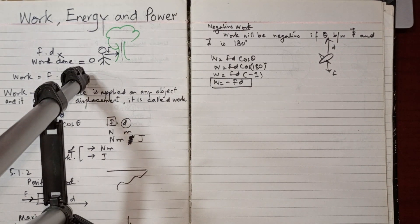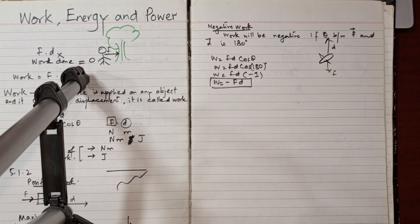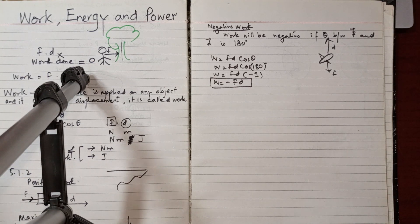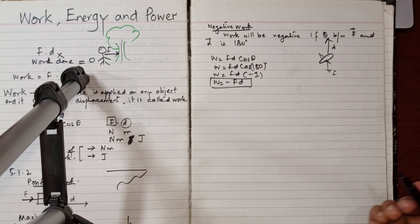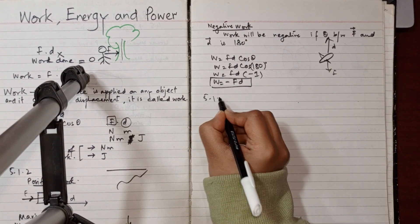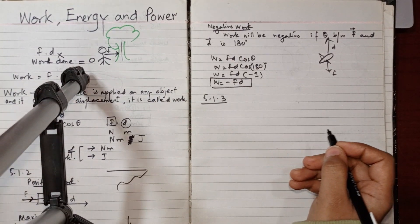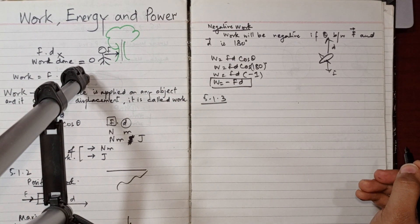Now topic 5.1.3 — work done by a constant force using a force-displacement graph. Similar to how we find speed from a speed-time graph using the area under the graph, the area under the force-displacement graph gives us the work done.